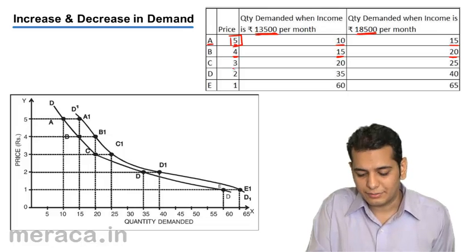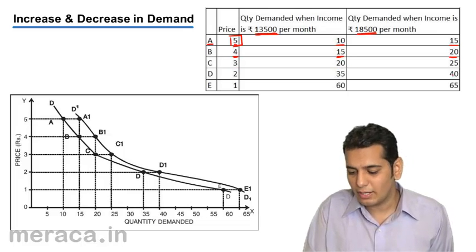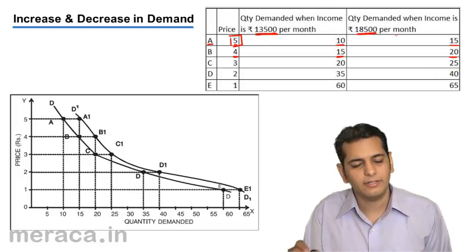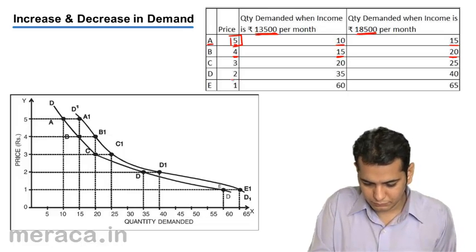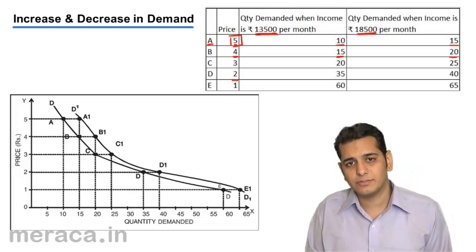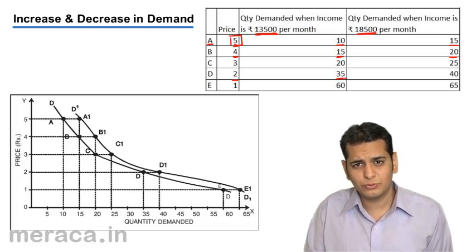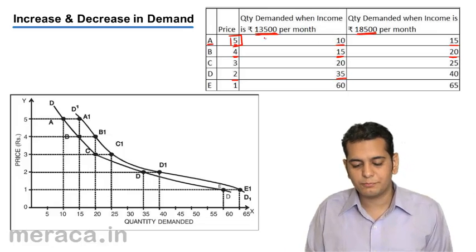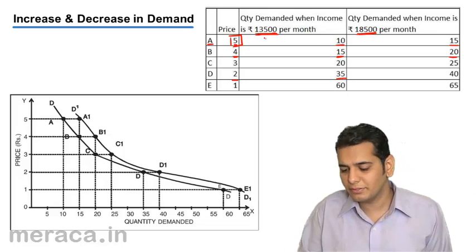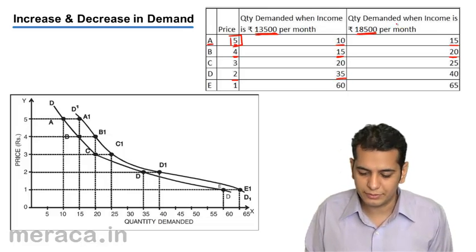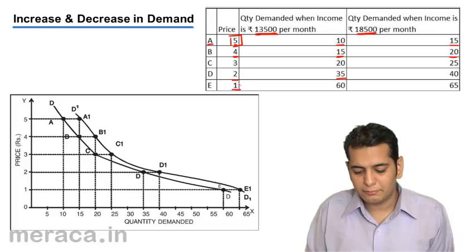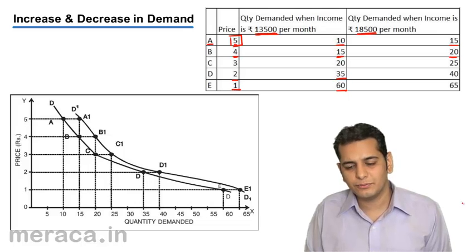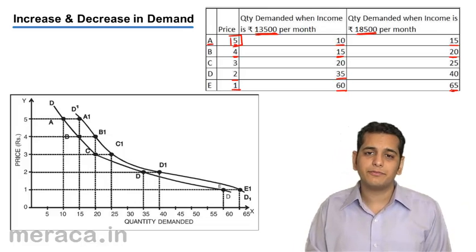Likewise, at Rs. 3, we consume 20 units and 25 units respectively at the income levels of Rs. 13,500 and Rs. 18,500. At Rs. 2, we consume 35 units and 40 units. At Rs. 1, we increase our consumption to 60 units and 65 units.